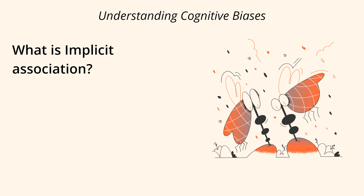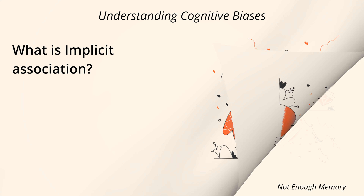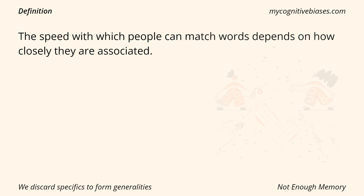What is implicit association? Definition: The speed with which people can match words depends on how closely they are associated.